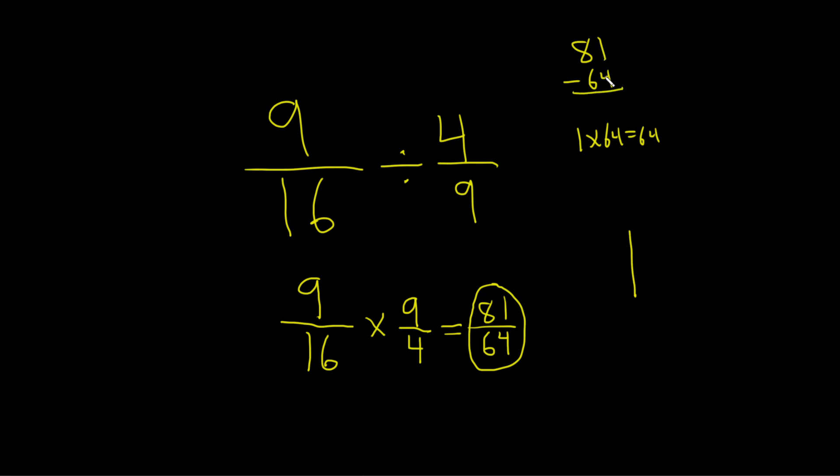So 1 minus 4. That won't work. So you borrow 1 or borrow a 10. You add 10 to that. It makes it 11. 11 minus 4 is 7. 7 minus 6 is 1. So you're left with 17. So it's 17 over 64.